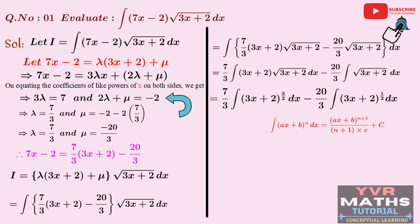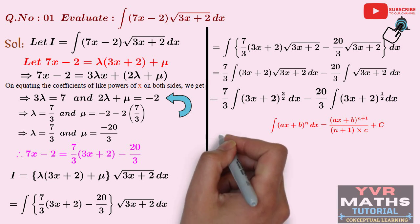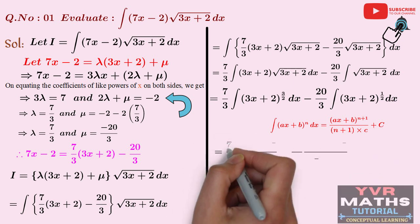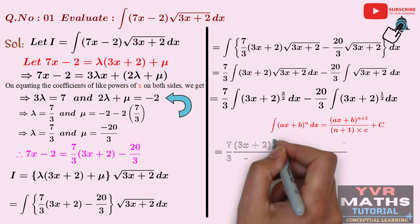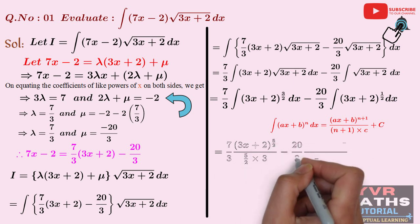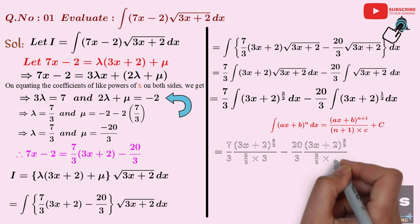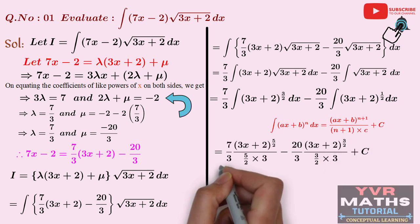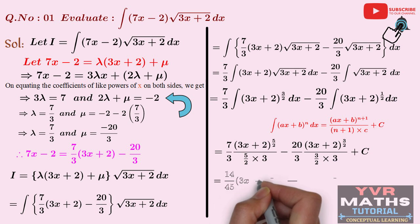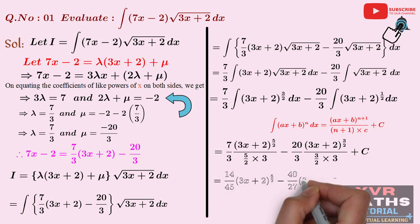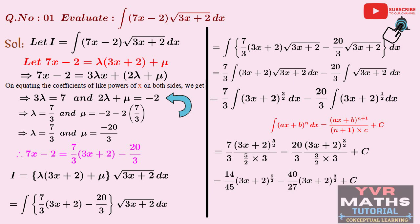Using the standard formula for integral (ax + b)^n dx, we apply it to each term: (7/3)·(3x + 2)^(5/2) / (5/2 · 3) − (20/3)·(3x + 2)^(3/2) / (3/2 · 3) + C. Simplifying: (14/45)·(3x + 2)^(5/2) − (40/27)·(3x + 2)^(3/2) + C. Here capital C is the integral constant. This is the final answer for the given integral.